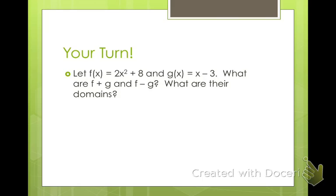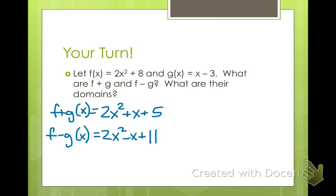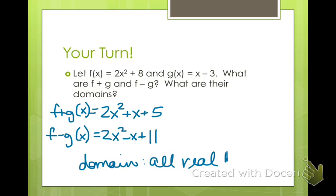Why don't you go ahead and try this one. f of x is 2x squared plus x and g of x is x minus 3. What are f plus g and f minus g, and what are their domains? Go ahead and pause the video. When you add them together and subtract them, you get 2x squared plus x plus 5 and 2x squared minus x plus 11. Do we have any restrictions? We have no square roots, so our domain is all real numbers — x can be anything.